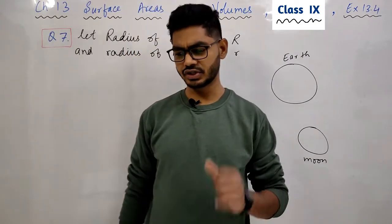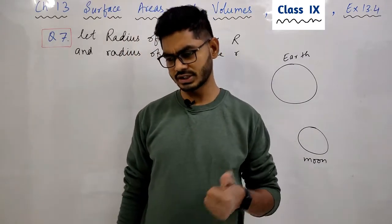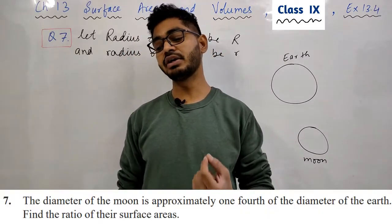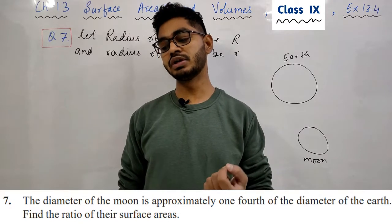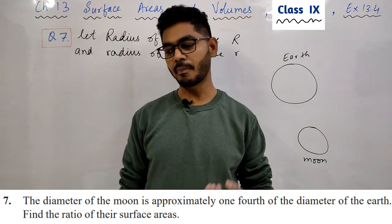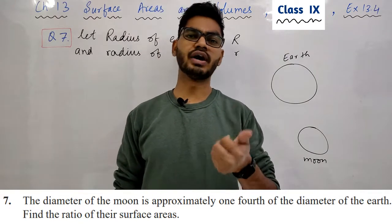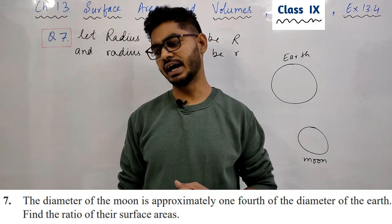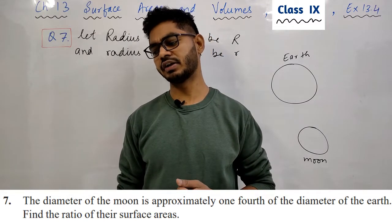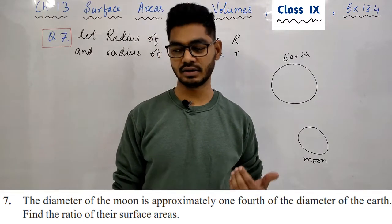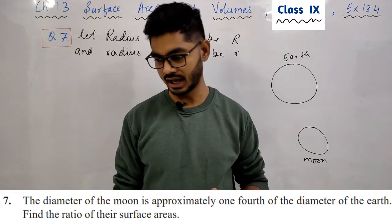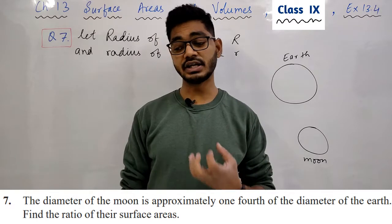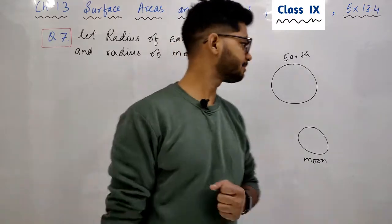एक बार question को अच्छे से read करते हैं। The diameter of the moon is approximately one-fourth of the diameter of the earth. Find the ratio of their surface areas.